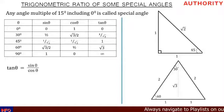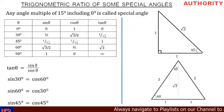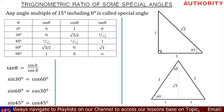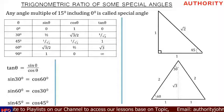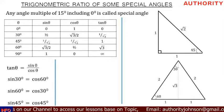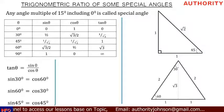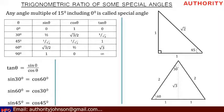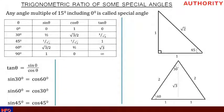Also note that sine 30 degrees equals cos 60 degrees, and sine 60 degrees equals cos 30 degrees. This means whenever you have solved for sine 30 degrees, the same value applies to cos 60 degrees. Similarly, sine 45 degrees equals cos 45 degrees.